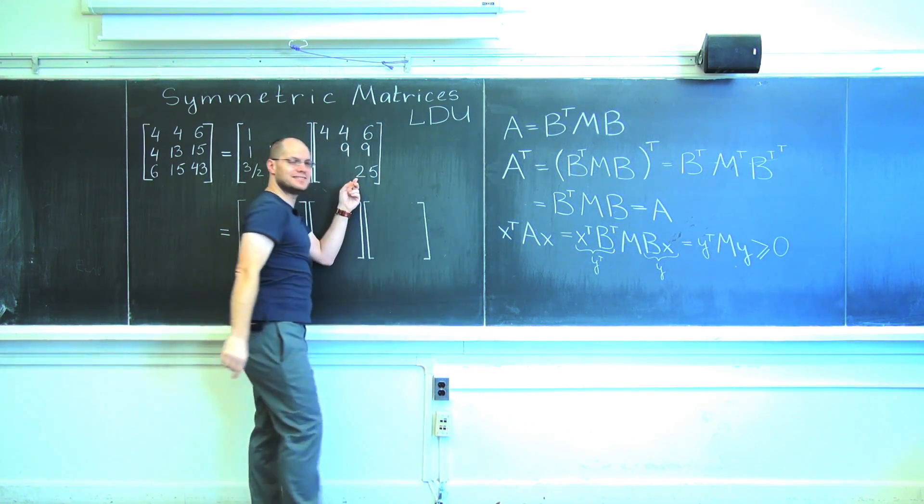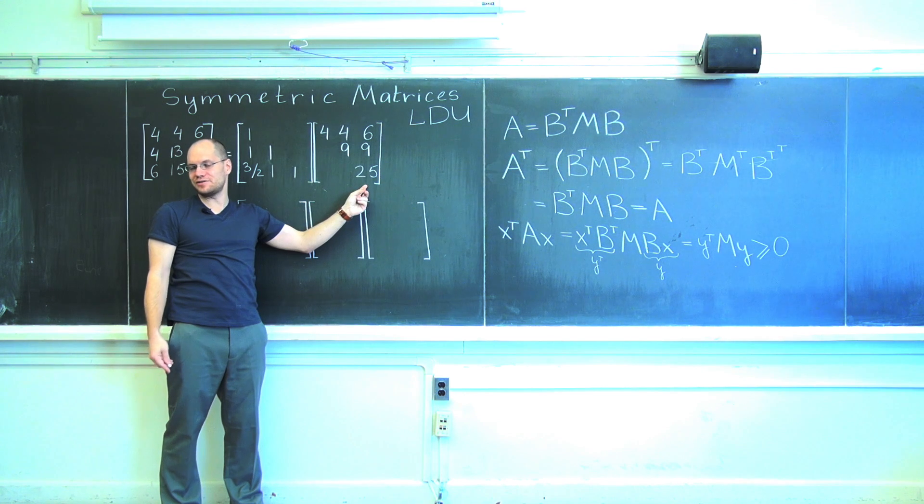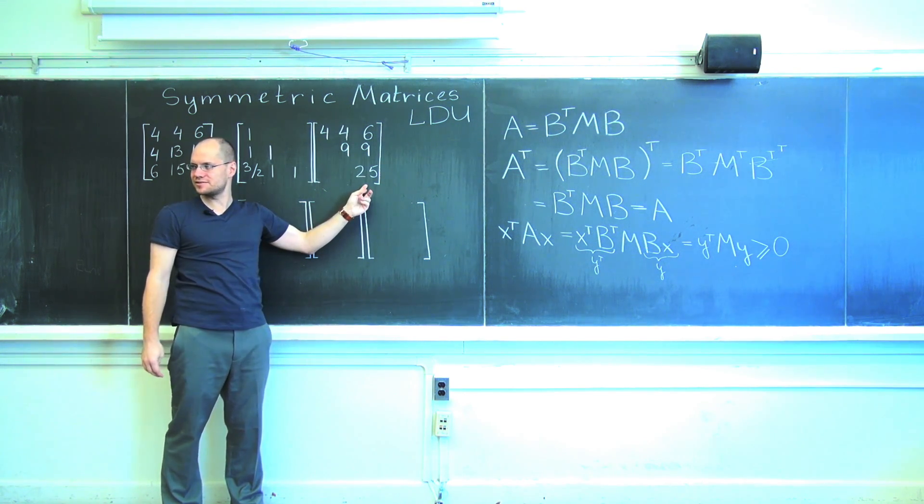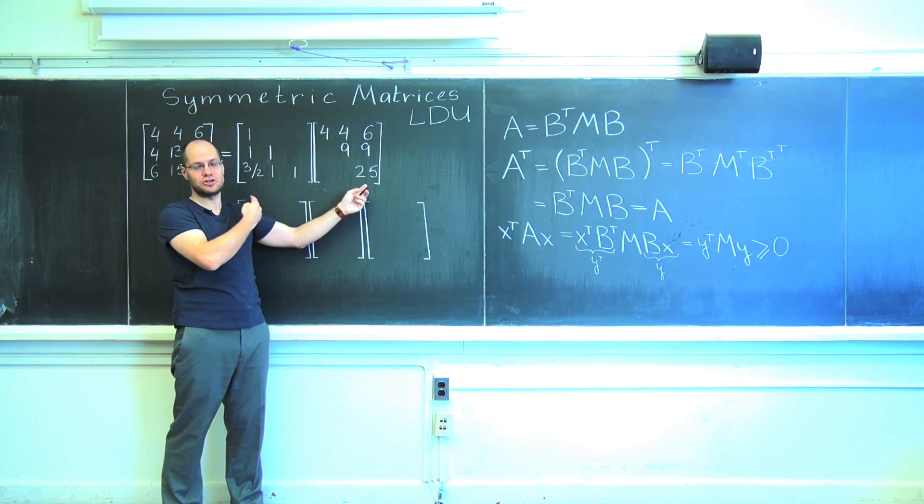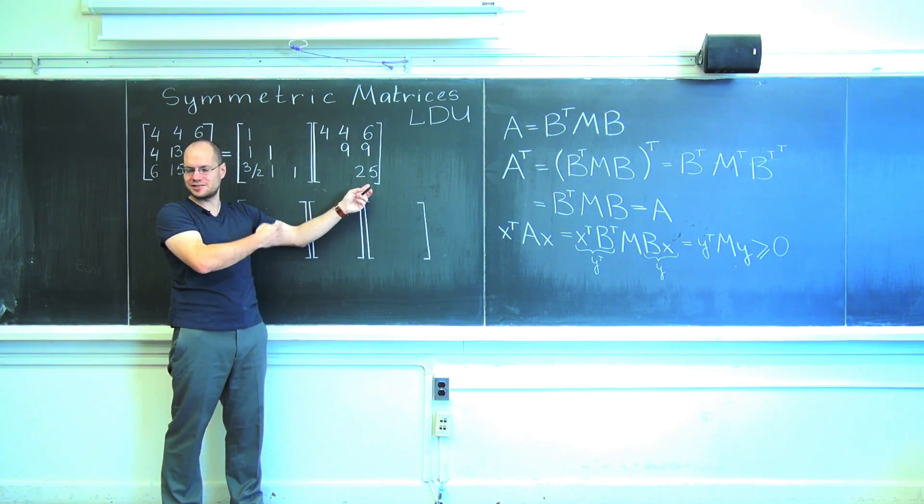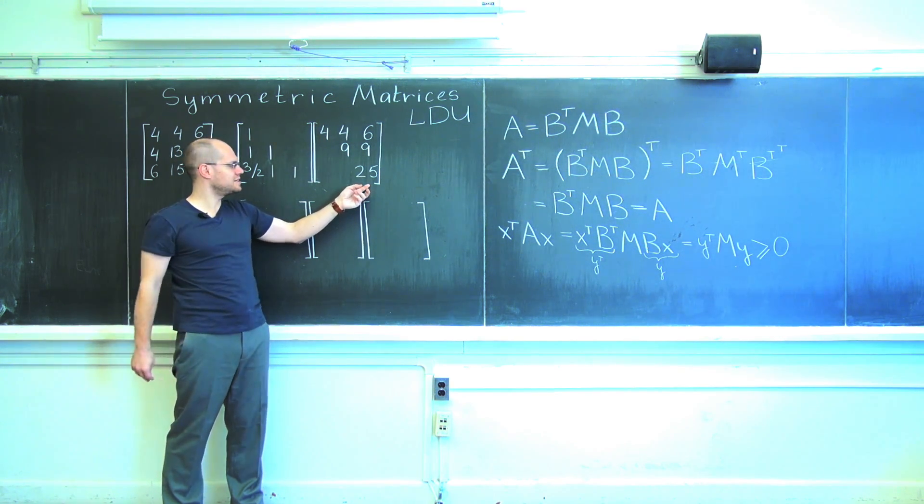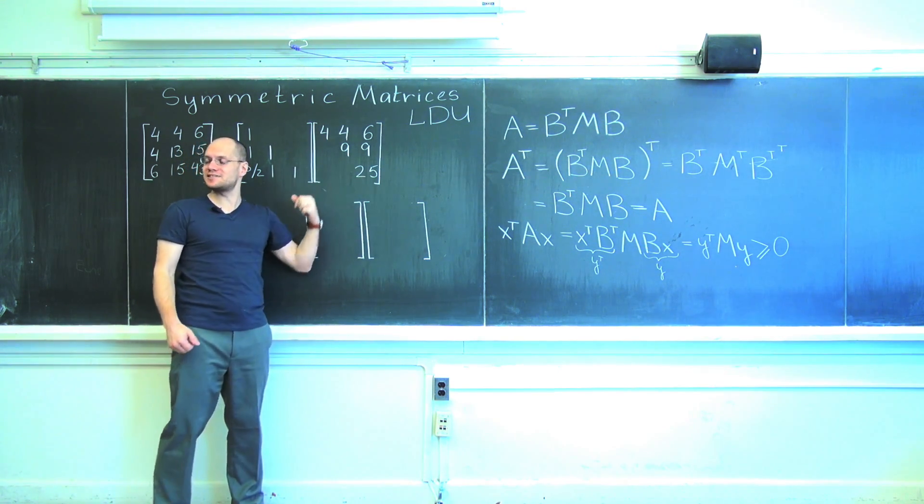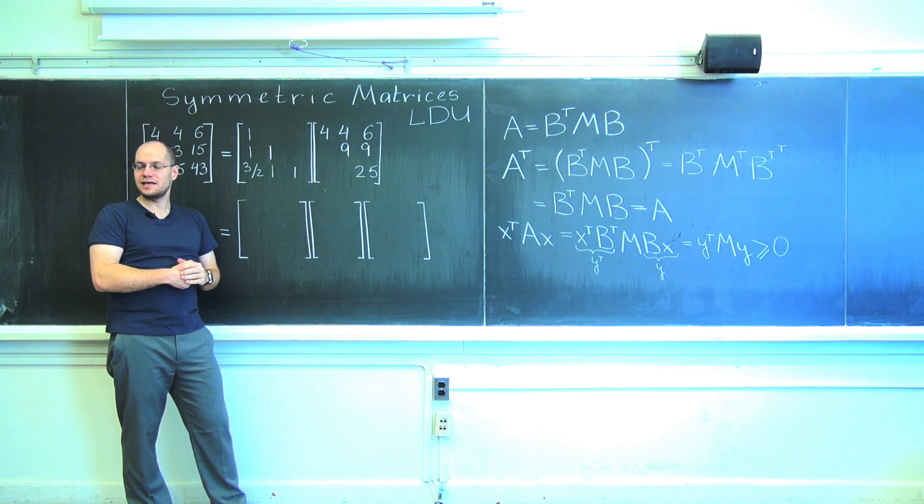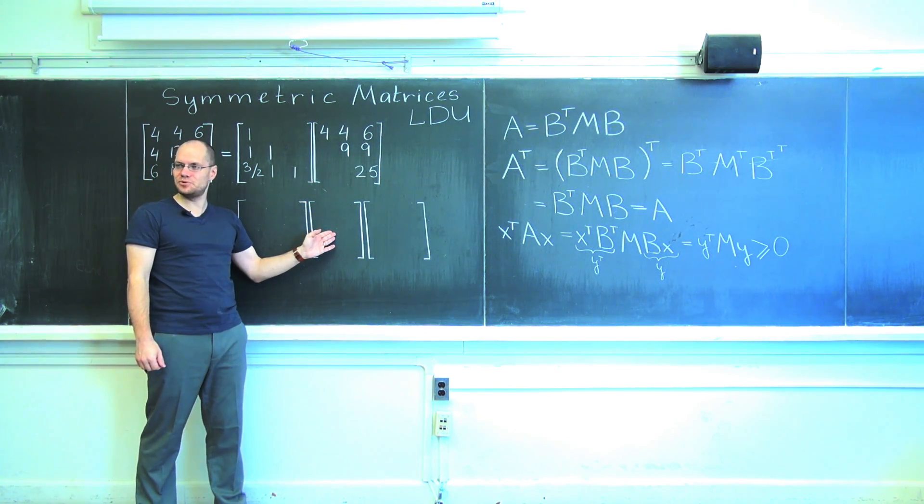So what is the matrix D? You will say I see this 4, 9, and 25. How nice that there are squares. That's a coincidence. I chose a special matrix for what's coming next. But they won't always be squares. They'll just be whatever numbers, possibly zeros, possibly positive and negative numbers. And you can factor them out into a diagonal matrix D. That's what this matrix D will be.